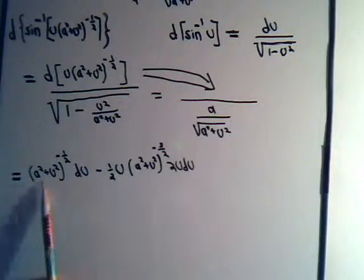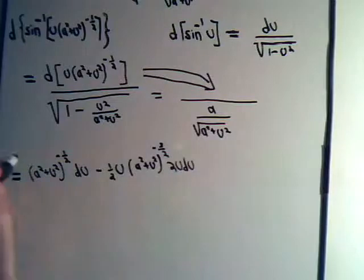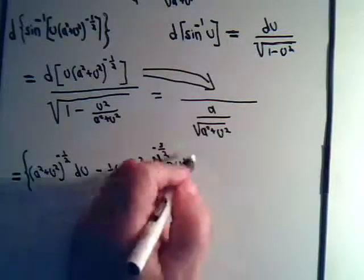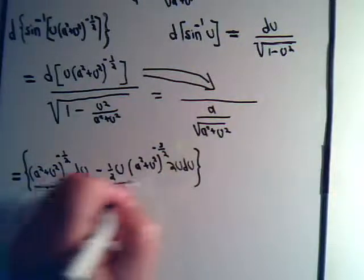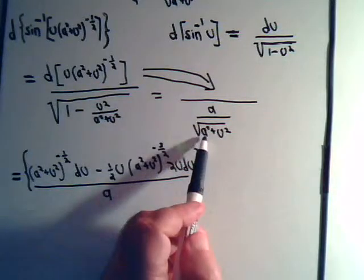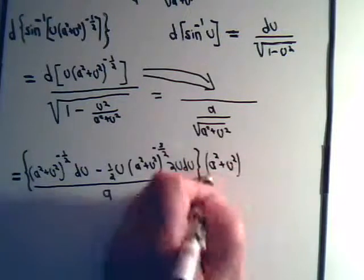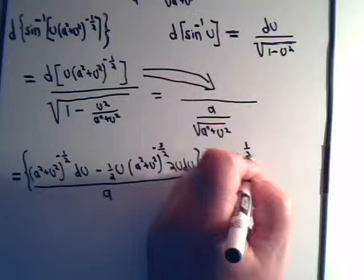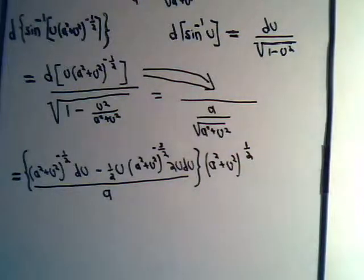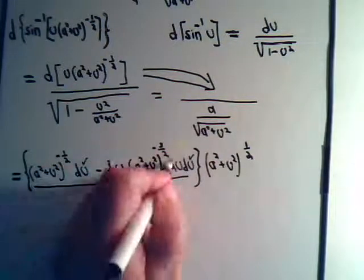This is going to be divided by the denominator. In the numerator we have a squared plus u squared to various powers. So instead of dividing, let's multiply by the reciprocal. Everything will then be divided by a, and this comes to the numerator — we'll write it as a squared plus u squared to the plus one half. Let's see what we have: we have the du terms that we can factor out, and we can multiply by u here.